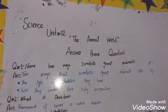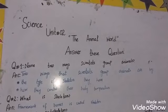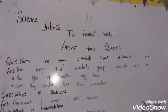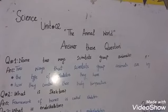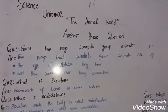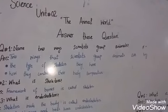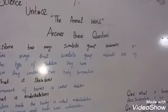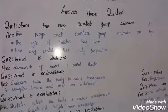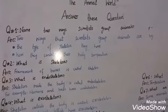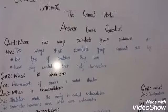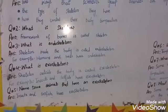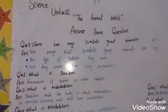Assalamu alaikum dear students. Today I am going to share some answer questions related to Unit Number Two: The Animal World. Question number one: name two ways scientists group animals. Two ways that scientists group animals are: number one, by the type of skeleton they have, and number two, how they control their body temperature.